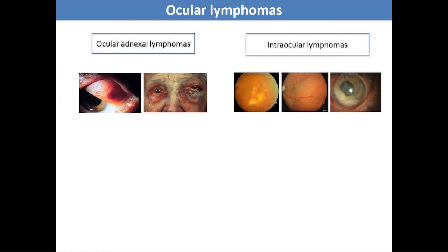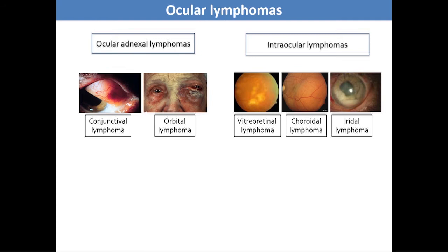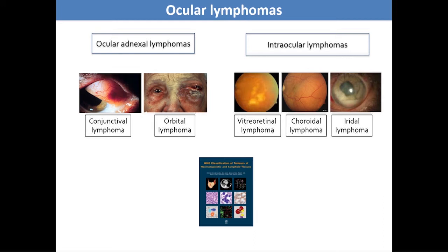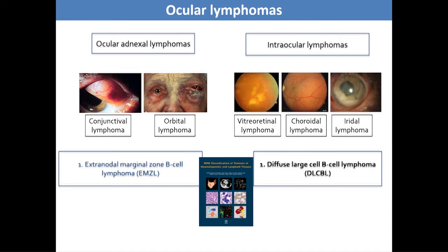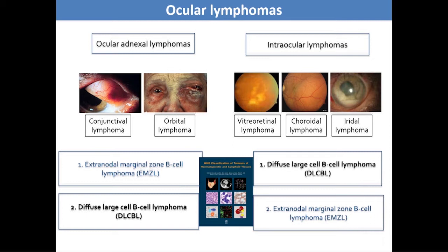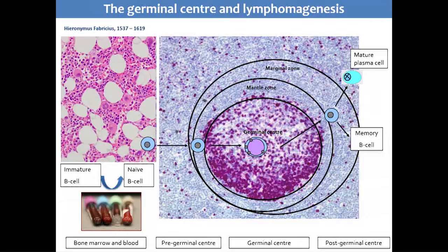When we look at the ocular lymphomas, we have the ocular adnexal lymphomas — those occurring in the structures that Stefan described — and then we also have those occurring intraocularly. When we subtype them according to the WHO lymphoma classification, the most common lymphoma occurring in the ocular adnexa is the extranodal marginal zone B-cell lymphoma, or MALT lymphoma for short, whereas the most common occurring intraocularly is the diffuse large B-cell lymphoma.